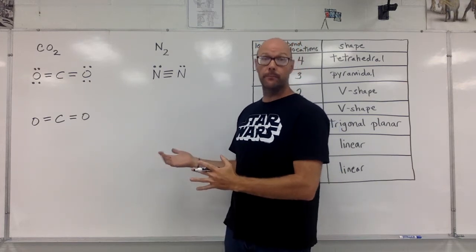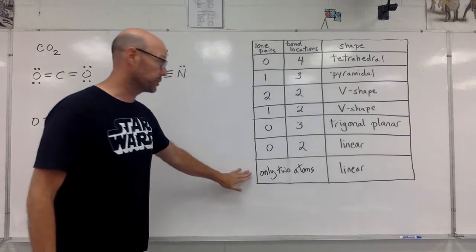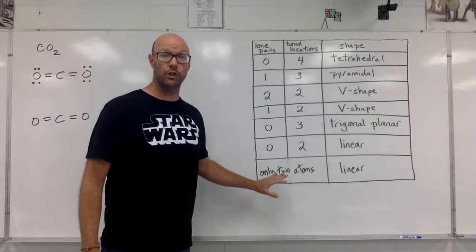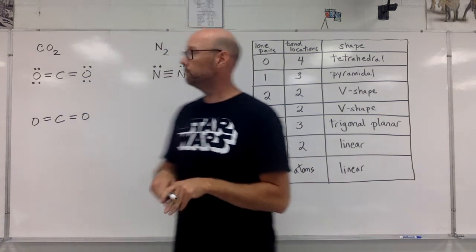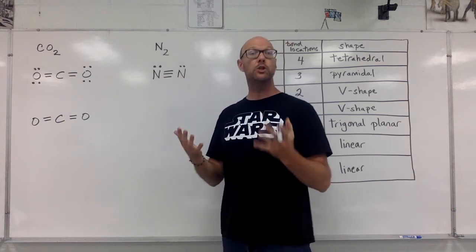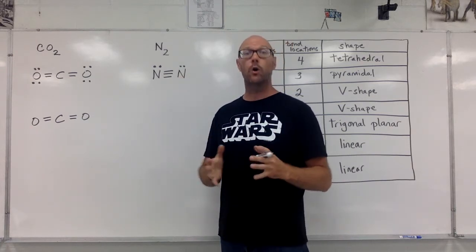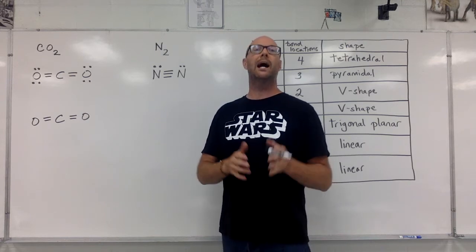There's no middle, there's no center. If there's only two atoms, we're also going to have a linear shape. They don't have to be the same. These are two nitrogens attached together. They could be two different atoms. If there are only two atoms, that's going to be a linear shape.